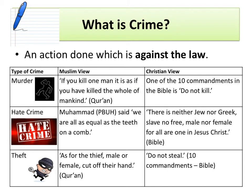We need to look at what crime is before we start to look at how people see crime. Crime is any action done which is against the law. It's really important to remember that it's not just a bad action — it needs to be something which is against the law of the country that you are in. As I go through some examples of crime, make sure you've got a definition and either a Muslim or Christian view on each, explaining why it would be a bad thing to commit that crime.